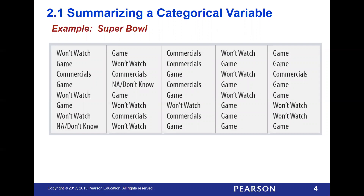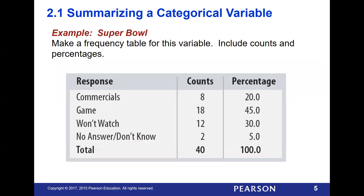Now if we take all this information and we just throw it all out there so you can look at it, it's not very informative about how many people are doing what during the game. So we try to take all of that and count how many times each of these particular characteristics occur — such as 'won't watch' — and then put those counts into another table so that we can summarize how many times these different traits are occurring in our survey.